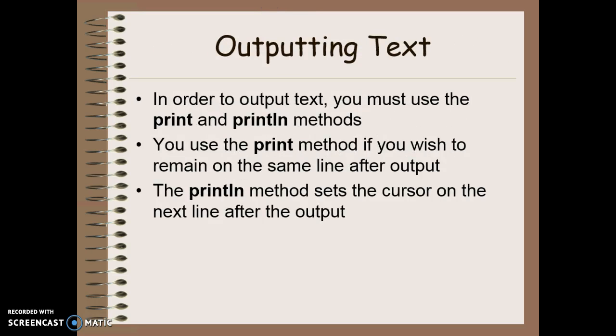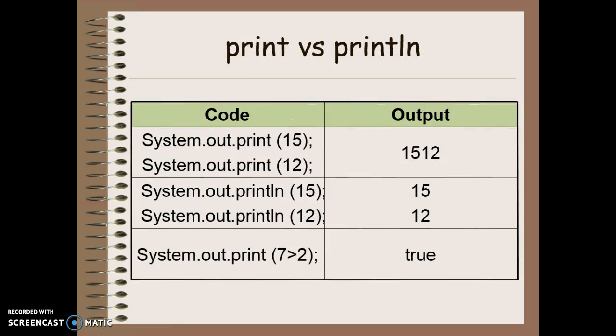So now we'll take a look at the second half of this which was outputting. If you want to output text you have to use the print and print line methods or println methods. Use the print method if you wish to remain on the same line after you output. If you use the println method you're going to move the cursor to the next line after you've finished outputting whatever it is you've asked to be output. So here's an example of what this would look like. If I were to do a print the number 15 followed by a print 12 it prints 15, leaves the cursor there, prints the 12 and leaves the cursor there. If I did the same thing using println methods it prints 15 returns to the next line, prints 12 and now my cursor would be down below. I can also print things like boolean values or strings or whatever else.